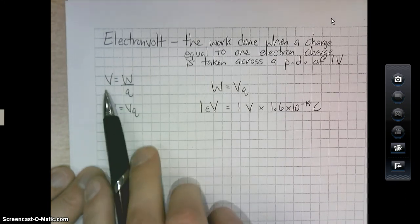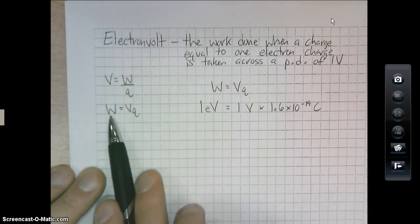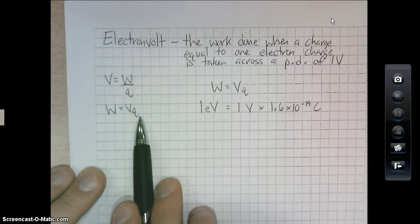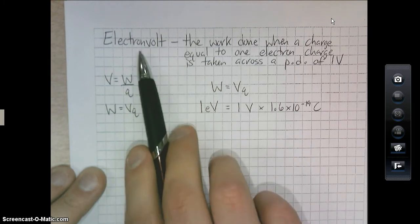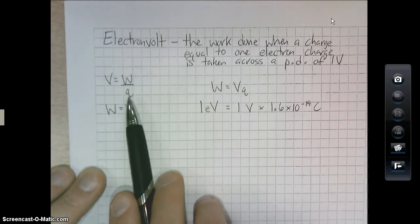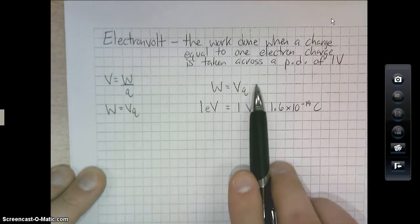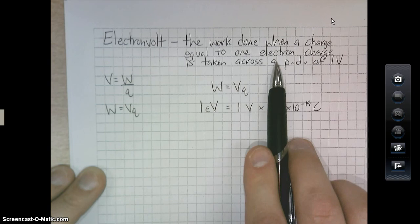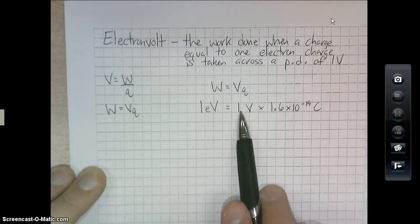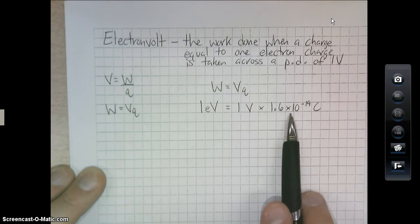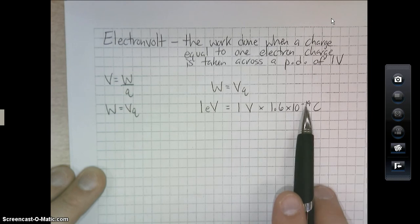And an electron volt is defined as the work done when a charge equal to one electron charge is taken across a potential difference of one volt. So, just a real quick refresher here with our equations. Voltage is the work per unit charge. Therefore, work is voltage times charge. So, again, it says the work done. So, an electron volt is the work, which also means it's very similar to energy. So, work is voltage times charge. So, if it's the charge of an electron across a potential difference of one volt, one volt times the charge of an electron, and this can be found in your packets under the constants pages, one volt times 1.6 times 10 to the negative 19th, that is what one electron volt is.